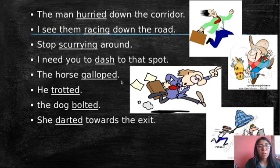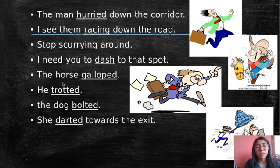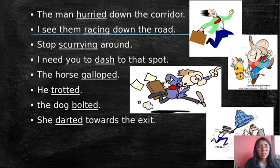You can use those words in many sentences. For example, 'the horse gallops' — that is another way to say 'run.' But in this case, 'gallop' you are going to use for horses. So you have to memorize — you have to memorize these words. 'Stop scurrying around' is the same as 'stop running around.'